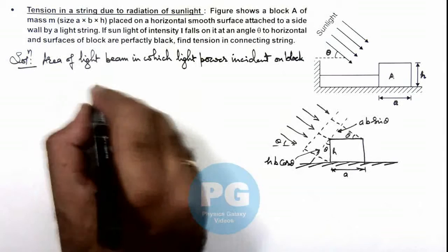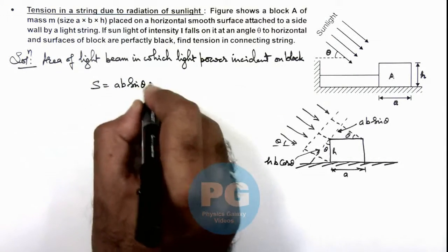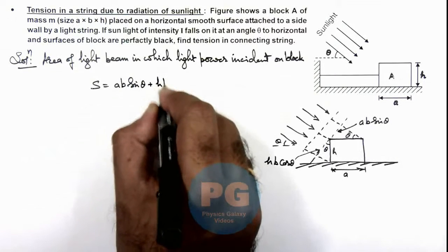Then this area we can write as S, which is ab sinθ plus hb cosθ.